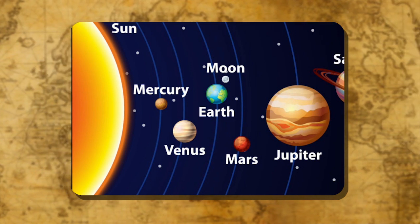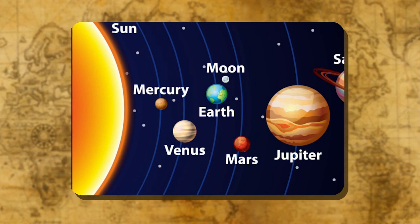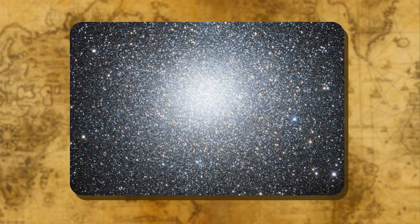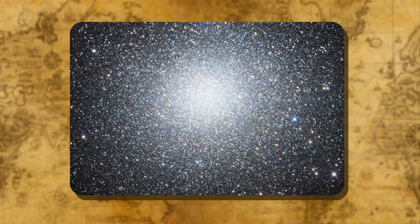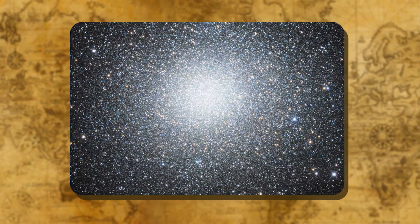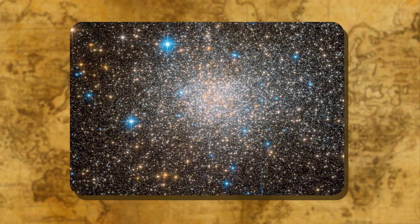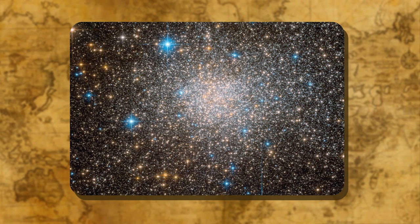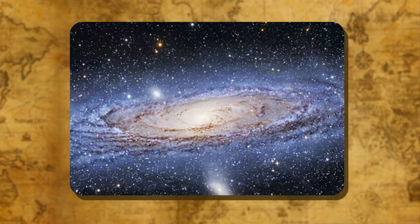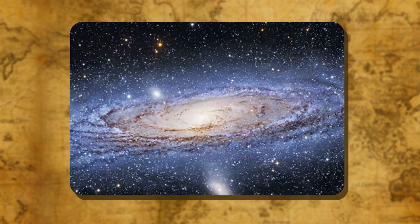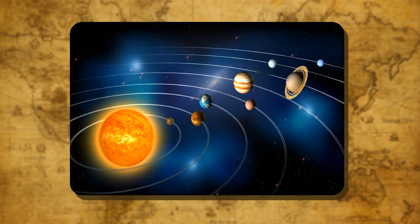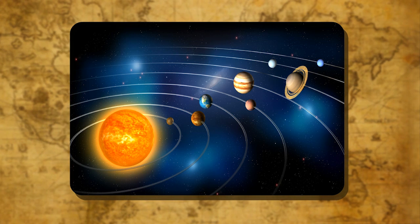The moon is a natural satellite of Earth and moves around it. Galaxies: There are millions of stars in the universe, occurring in groups. Millions of stars together form a group called a galaxy, and there are millions of galaxies in the universe. Our sun belongs to a galaxy called the Milky Way galaxy, or Akash Ganga.